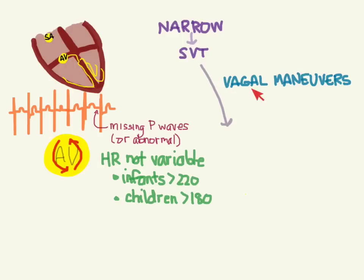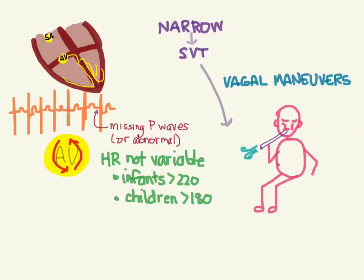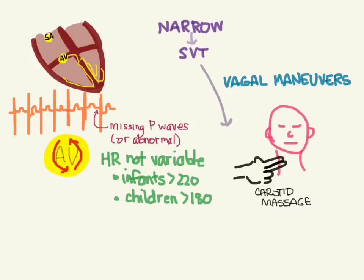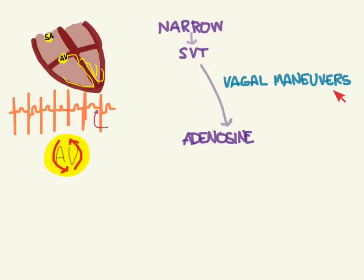The first thing you can try in a patient with SVT, while getting drugs ready, are vagal maneuvers — but don't delay any definitive therapy for these. In infants you can try putting ice on their face, not covering the airway. Older kids can attempt a Valsalva by blowing through a very thin straw. Carotid massage is generally avoided in older patients but is acceptable in young kids. Avoid ocular pressure as it can damage the retina.